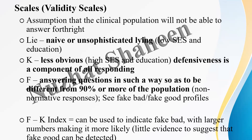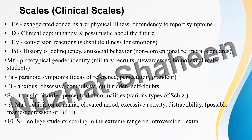After validity scales, we calculate the Dissimulation Index by subtracting K from F (F minus K). This is done to indicate whether the person was faking bad or faking good. Comment below in the comment section if you know or don't know what faking bad or faking good means — I'll respond to your comments.